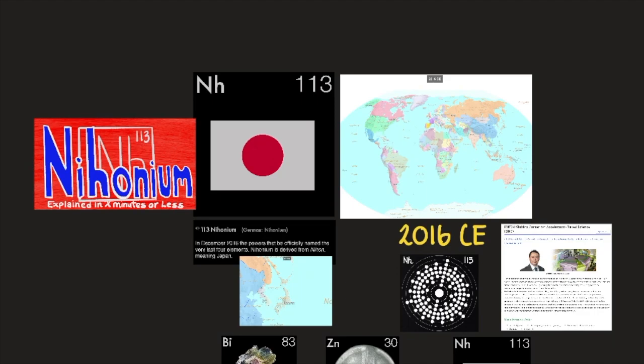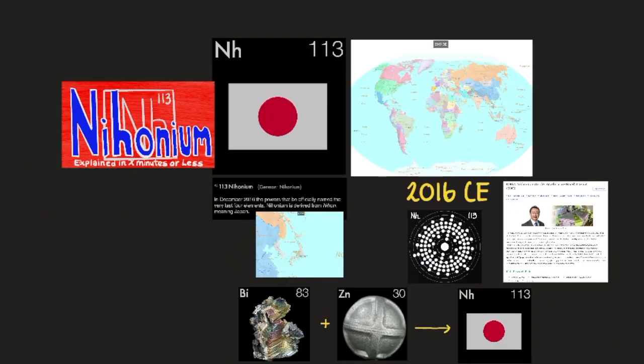Hello everyone, today we're going to talk about element number 113, nihonium, an artificially produced transuranium element of atomic number 113.